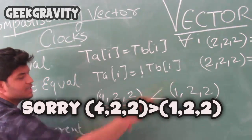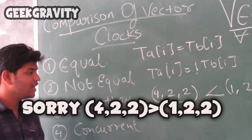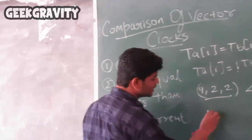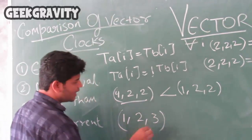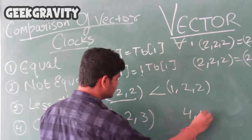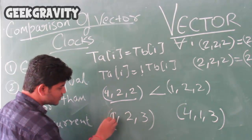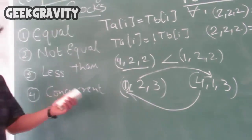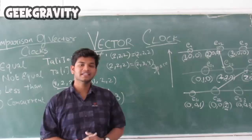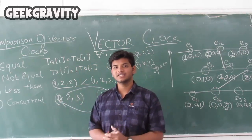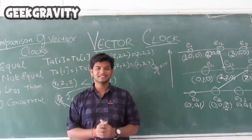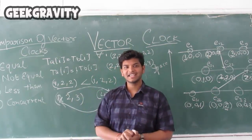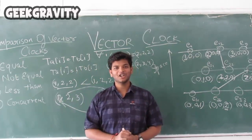One vector clock is less than another when all components of one are less than or equal to the corresponding components of the other, with at least one strictly less. For the concurrent case, neither the first vector is less than the second nor the second is less than the first. For example, take 1, 2, 3 and 4, 1, 3 — since 1 is less than 4 but 2 is greater than 1, these vectors are concurrent. So this was all about vector clock. In the next video we are going to see about mutual exclusion and deadlocks in distributed systems. If you like our channel, do like and subscribe and write any queries in the comment box or email us at ggravity@gmail.com.